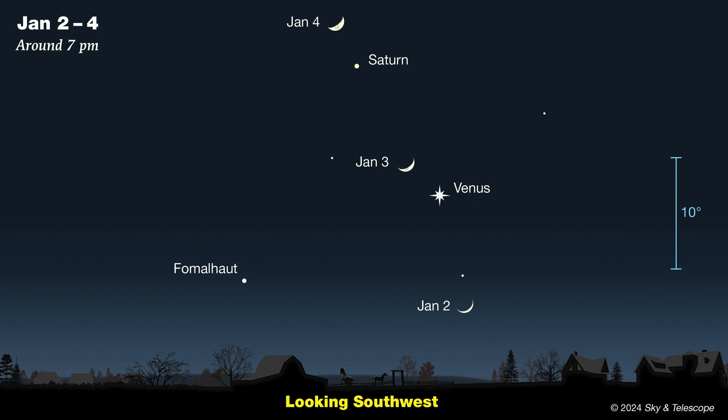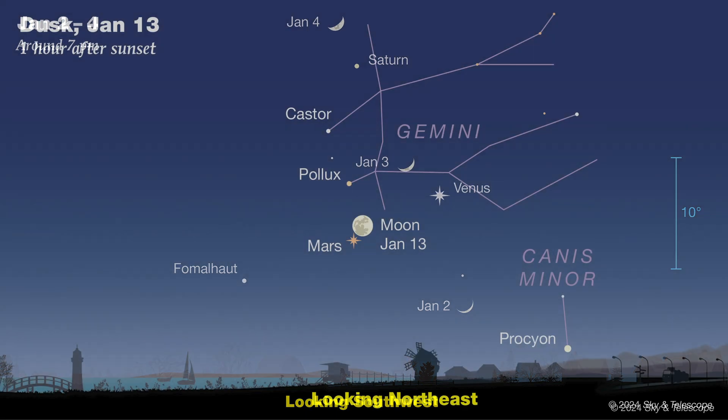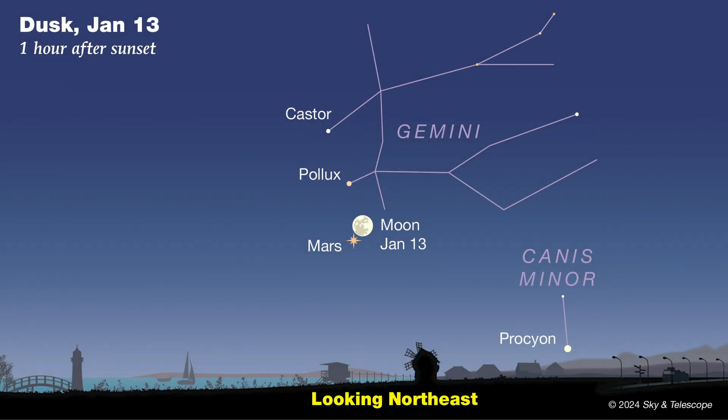Meanwhile, the moon will be weaving its way among these worlds. A thin crescent will sit just above Venus on the 3rd and above Saturn on the 4th. The full moon is very close to Mars on the night of Monday, January 13th.